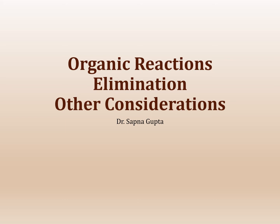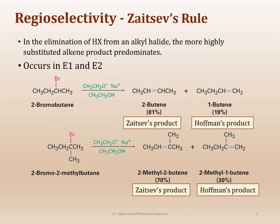Elimination reactions are all well and good. You learned about alpha-beta elimination, Hofmann product, Zaitsev's product, and so on. You also know there is E1 and E2. There are just a few things that are a little bit different about E1 and E2 compared to substitution. I want to go over some of those considerations with you that you need to pay attention to. The first consideration is regioselectivity. We're going to talk about two things: regioselectivity and stereoselectivity.